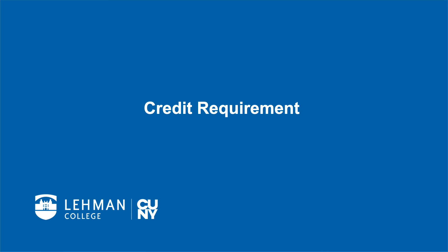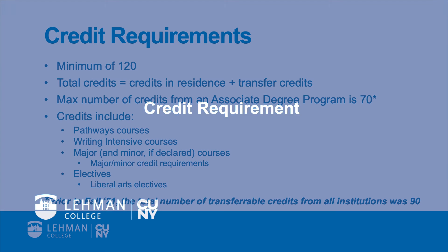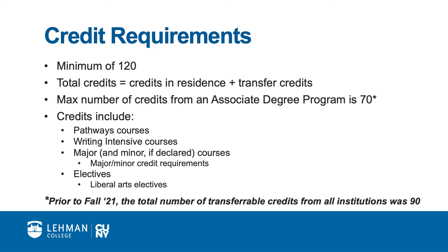The final requirement that we are going to discuss is the credit requirement. To qualify for graduation, students must complete a minimum of 120 credits. This 120 credit total is made up of credits in residence, or coursework that you completed at Lehman, and your transfer credits. It's important to know that the maximum number of credits that can be transferred from an associate degree program is 70. Your credits will include a variety of different types of requirements: Pathways courses, the writing intensive courses, courses required for your major and for your minor if declared, and elective credits.